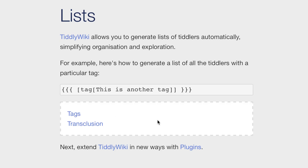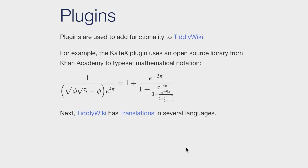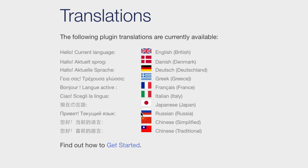TiddlyWiki is flexible, but it can be extended in new ways with plugins. For example, the Katex plugin uses an open source library to typeset mathematical notation. TiddlyWiki also has translations into several languages that have been created by members of the community.